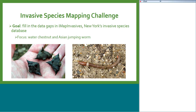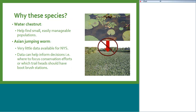Today our focus is on water chestnut and Asian jumping worm — two underreported species with a severe lack of data in the IMAP database. This challenge aims to get more folks out there on the ground reporting. For water chestnut, we definitely have a lack of data, especially regionally in central New York. We're unsure if water chestnut is actually present or if it just hasn't been reported — great information for PRISM leaders to find out, because they could then find small, easily manageable populations.